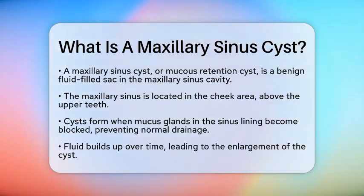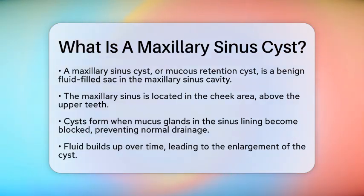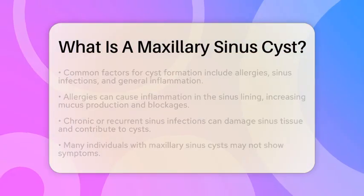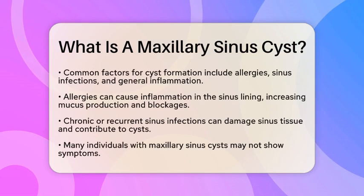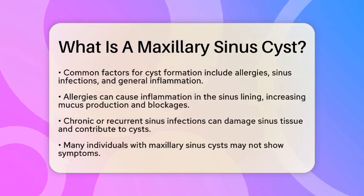So, how does this cyst form? It starts when the mucus glands in the sinus lining become blocked. This blockage prevents normal mucus drainage, causing fluid to build up. Over time, this fluid accumulation can enlarge into a cyst.